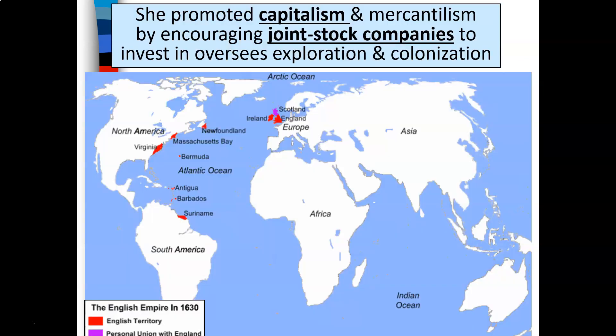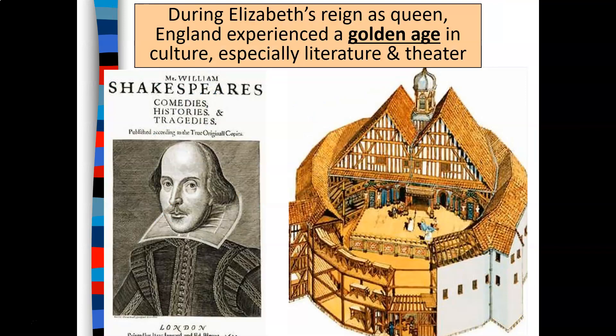Elizabeth promoted capitalism and mercantilism by encouraging joint stock companies to invest in overseas exploration and colonization. On the map you can see red dots in different parts of the world representing English territories that were acquired. During Elizabeth's reign as queen, England experienced a golden age in culture, especially in literature and theater.